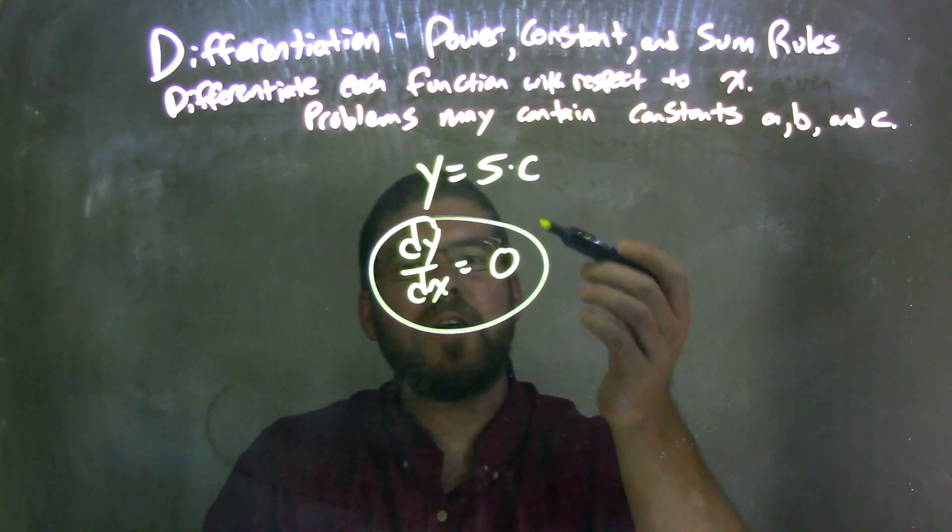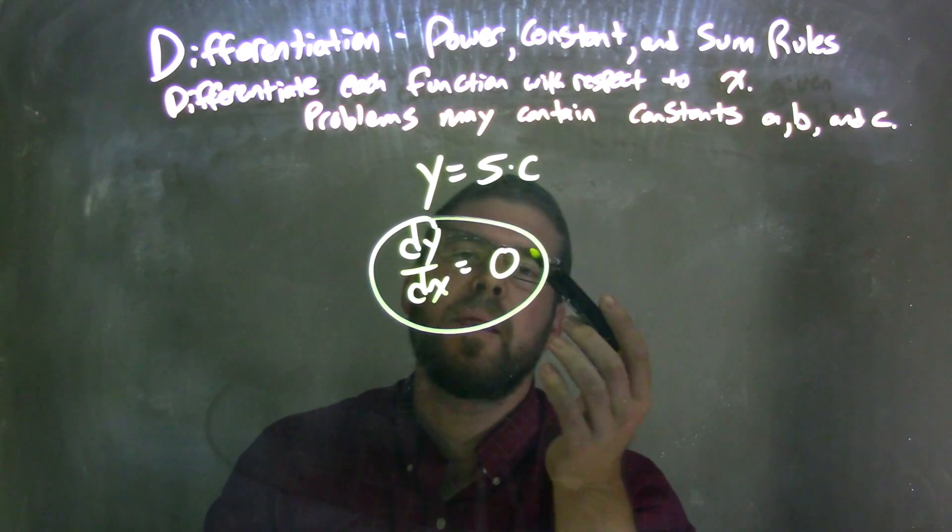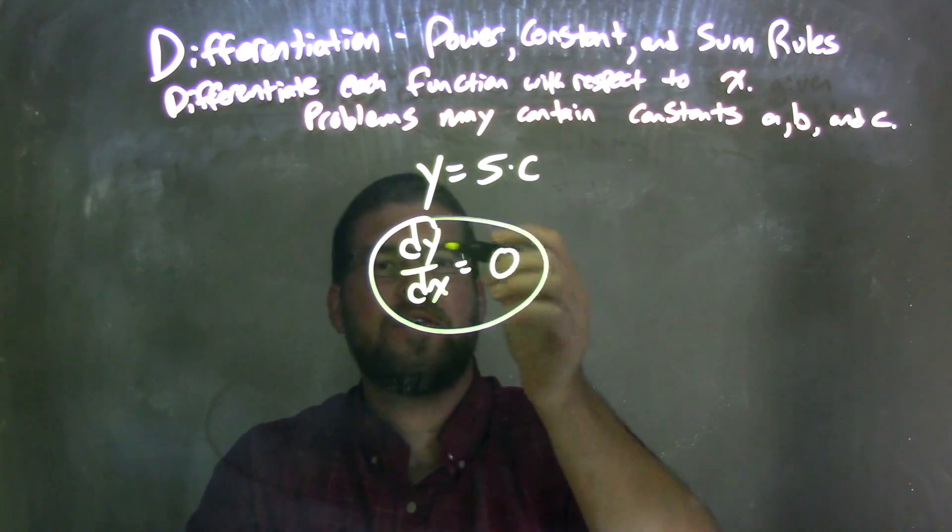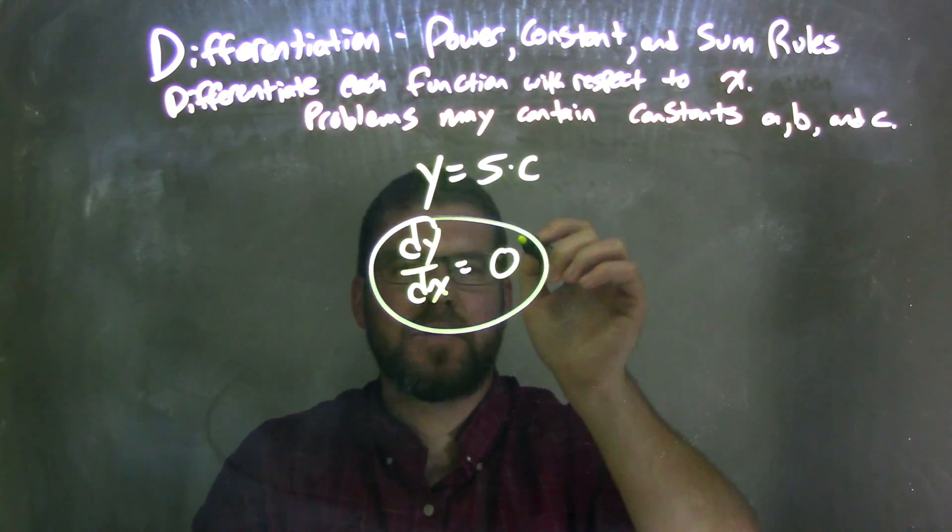And so when we take the derivative of a constant, we get 0. So our derivative, or our answer, is that dy/dx is equal to 0.